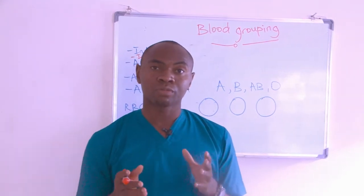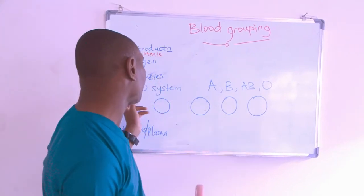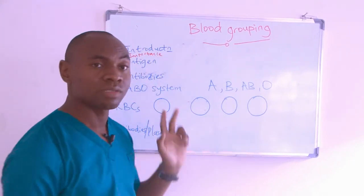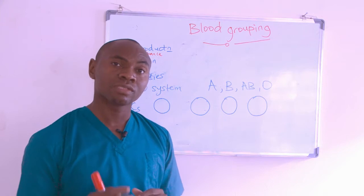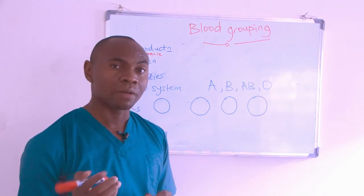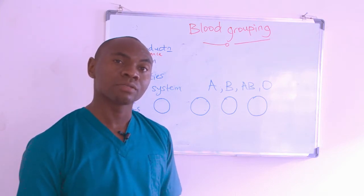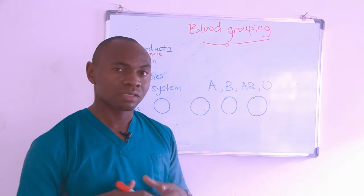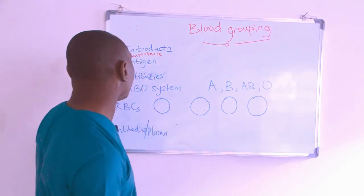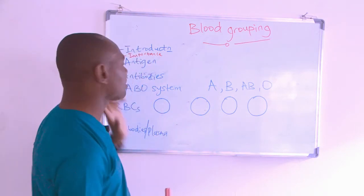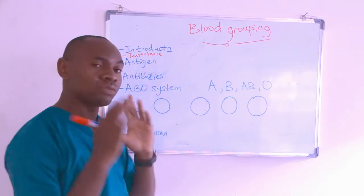There is a system with which blood group is classified — that system is called the ABO system. It was introduced in 1901 and since then it has helped humans a lot. Let's look at what we call antigens and antibodies, as understanding these two things will give us a clear picture of what blood grouping is all about.